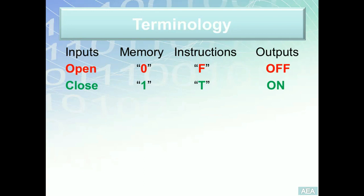On the output side, a logic zero in the PLC memory is meant to turn off a discrete output, and a logic one is meant to turn on a discrete output. The items shown in red all mean the same thing: open, logic zero, false, off — we can also add stop or de-energize. On the other side, the green items — closed, logic one, true, on — we can also add start, set, or energize. They all mean the same thing.